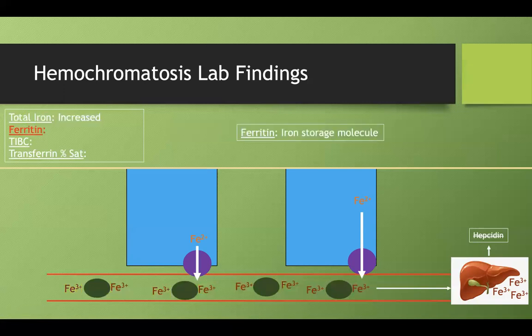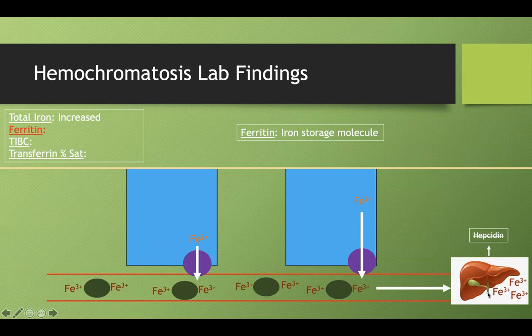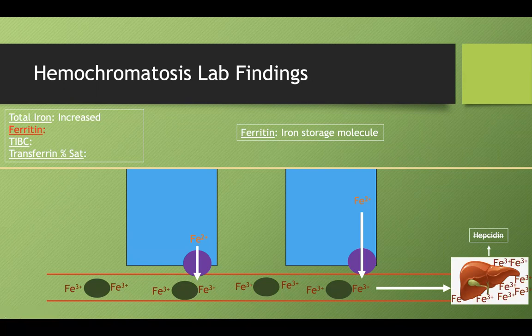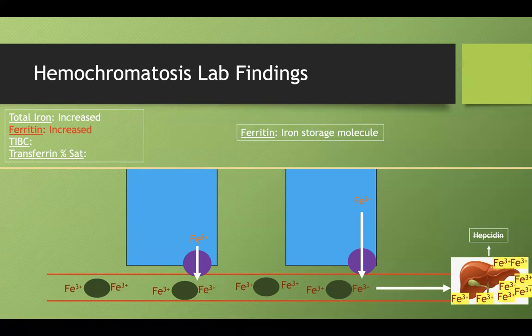Our ferritin is the amount of iron that's stored. If you have all this transferrin and iron in your bloodstream, a lot of it's going to go into the splenic macrophages, the bones, or the liver. So you'll get a ton of storage iron, also known as ferritin, and that can be measured, and that'll be increased on laboratory studies.